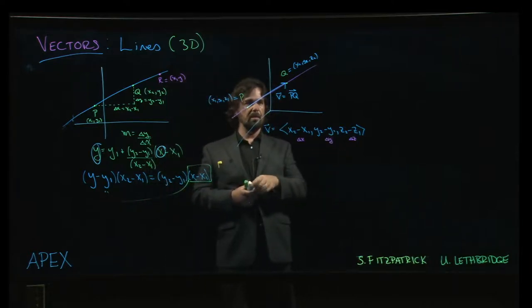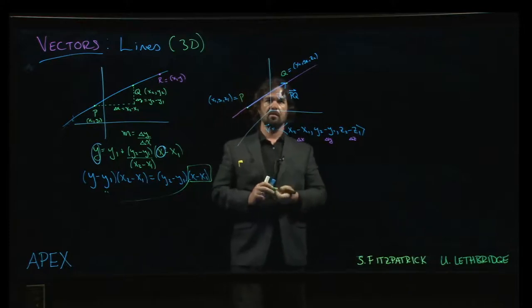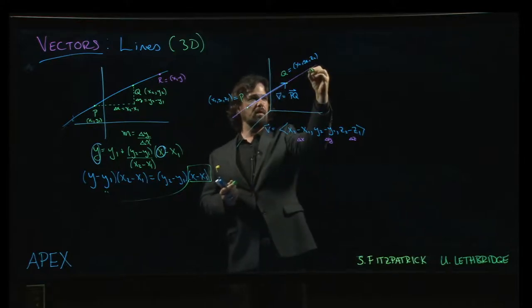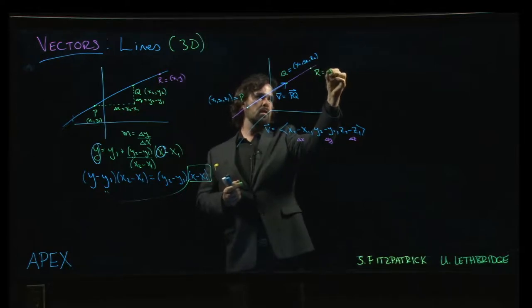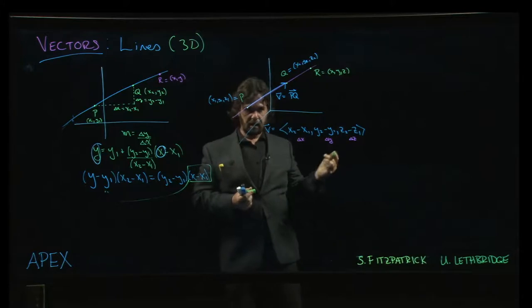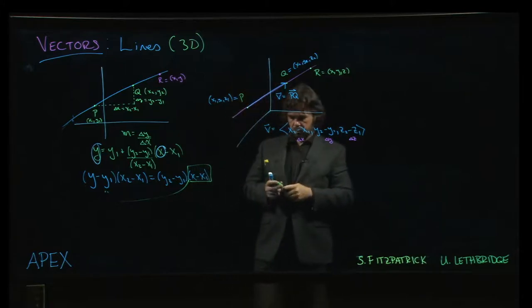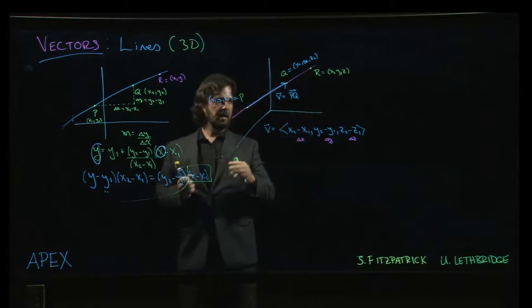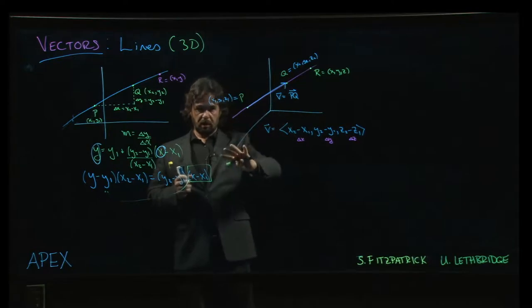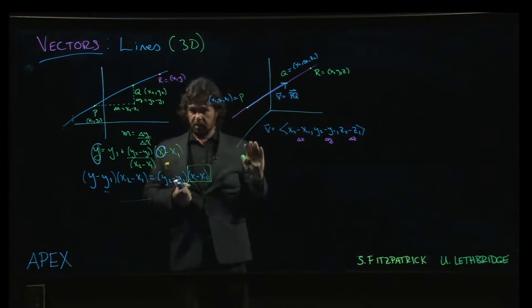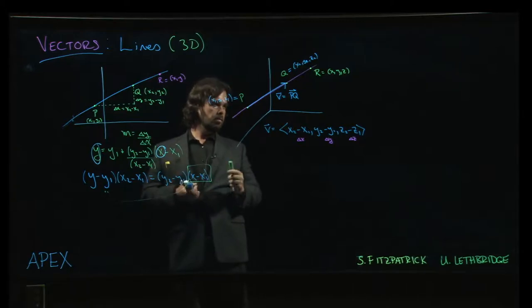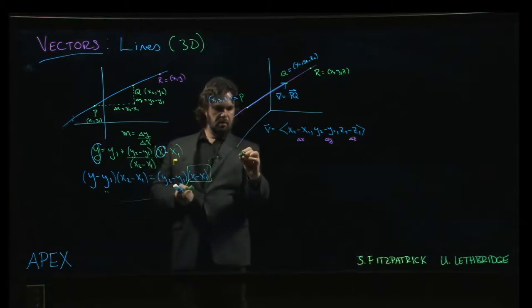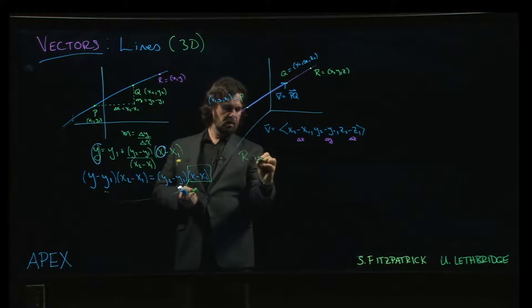Well, the next step is wanting to describe some other point on the line. So, let's think about it. Here's some other point. We have our x, y, z. And I want to specify that that point is on the line. It's on the same line as the points p and q. How are we going to do it?